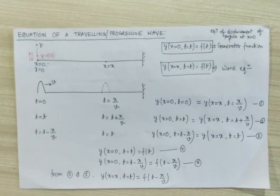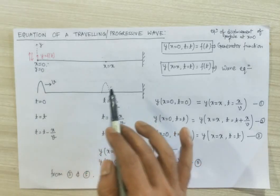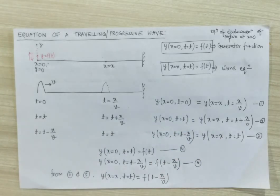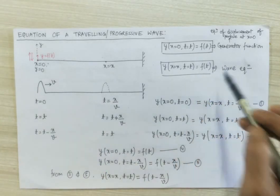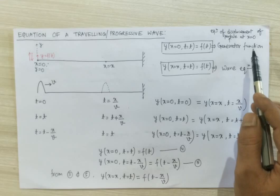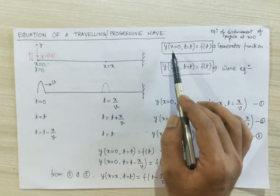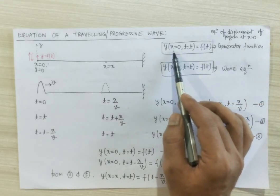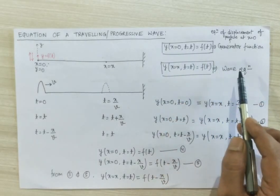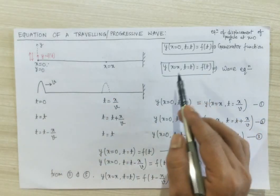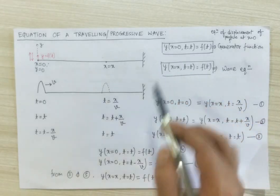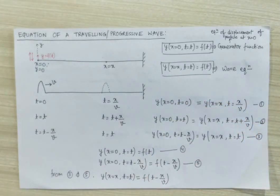Now we are going to find the equation of wave. For the equation of wave, we need y of any x in the generator function. The generator function is the equation of the particle at a particular position, that is x equal to 0. The equation of wave means at any x, what will be the y of the function — and it is simply called the wave equation.